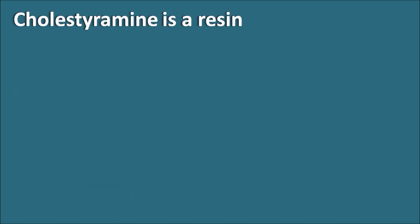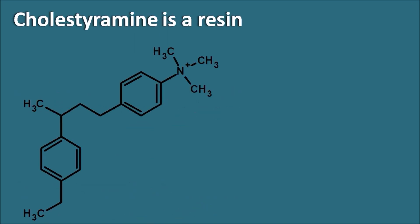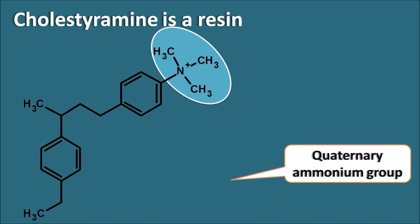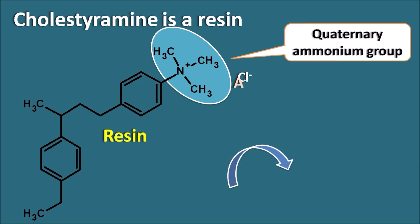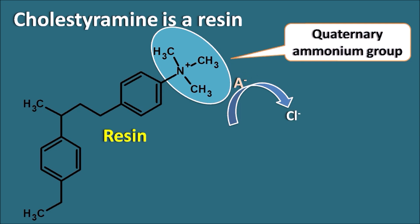First, let us look at cholestyramine. Cholestyramine is a resin — specifically a styrene diaminyl benzene copolymer — and one important feature is that it has a quaternary ammonium group, specifically the trimethyl quaternary ammonium group. Because of this, it can attach to an anion like chloride. This resin acts as an anion exchange resin, where any other anion can bind to the resin by replacing the chloride.